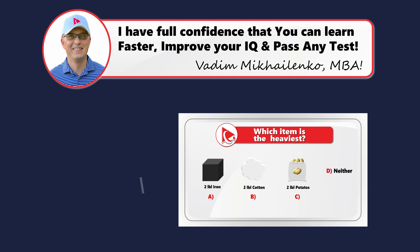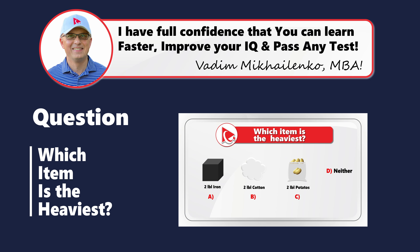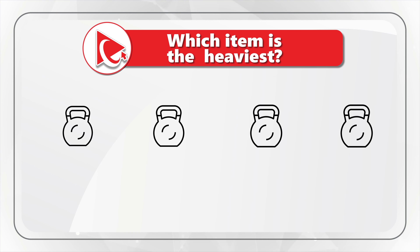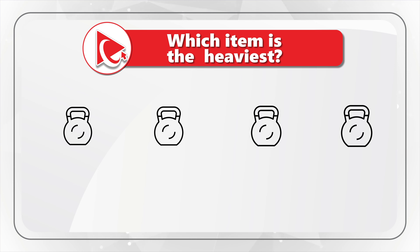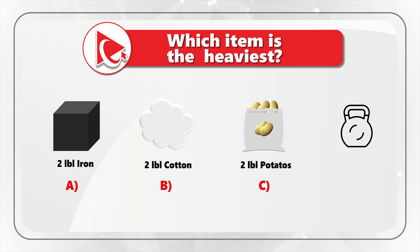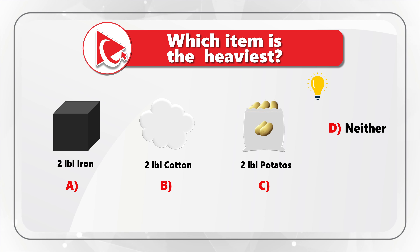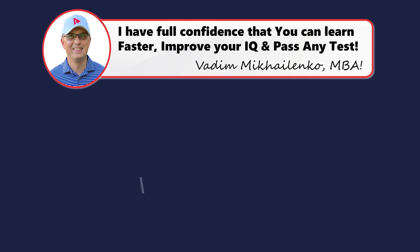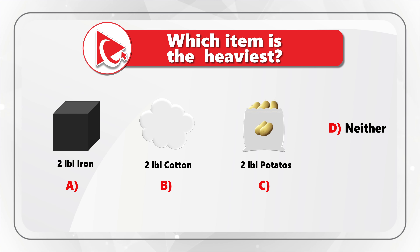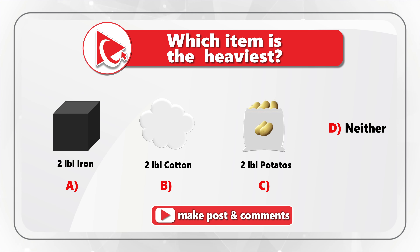Here is an absolutely brilliant and at the same time very tricky question, but I have full confidence that you will be able to solve it. You need to determine which item is the heaviest. You are presented with four possible choices: Choice A: two pounds of iron. Choice B: two pounds of cotton. Choice C: two pounds of potatoes. And Choice D: neither one. Take a close look to see if you can come up with the answer.